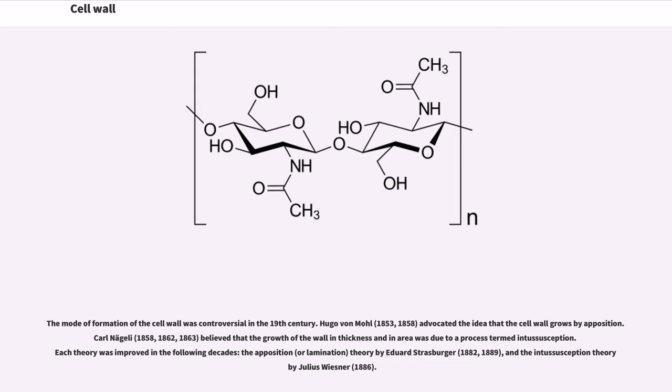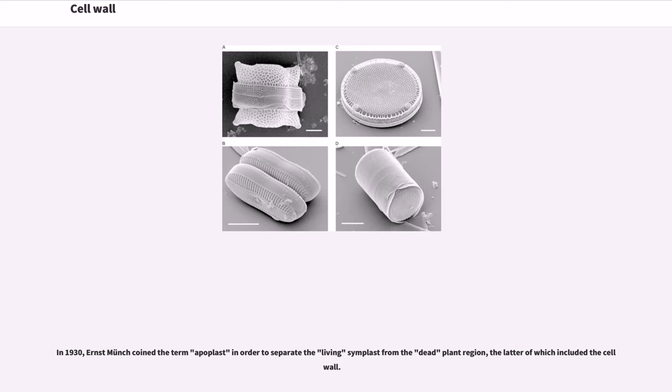The mode of formation of the cell wall was controversial in the 19th century. Hugo von Mohl, 1853, 1858, advocated the idea that the cell wall grows by apposition. Karl Nägeli, 1858, 1862, 1863, believed that the growth of the wall in thickness and area was due to a process termed intussusception. Each theory was improved in the following decades. The apposition, or lamination, theory by Edward Strasburger, 1882, 1889, and the intussusception theory by Julius Wiesner, 1886. In 1930, Ernst Münch coined the term apoplast in order to separate the living symplast from the dead plant region, the latter of which included the cell wall.